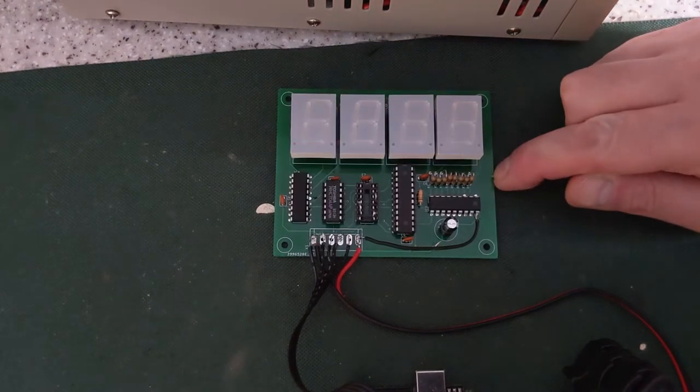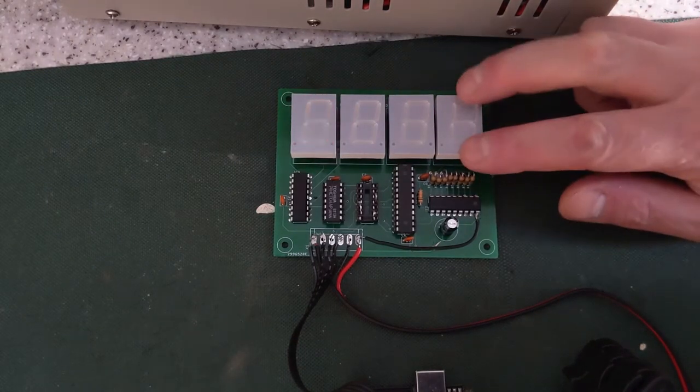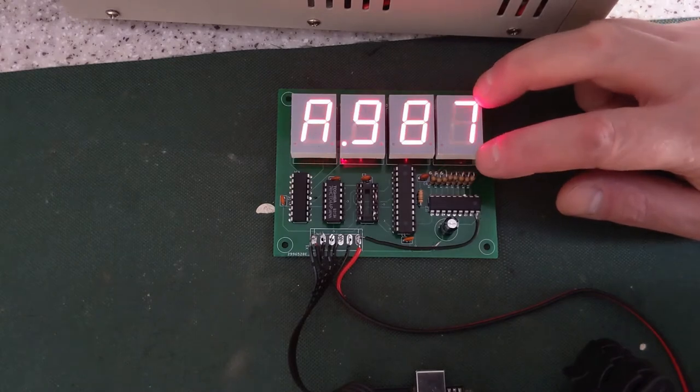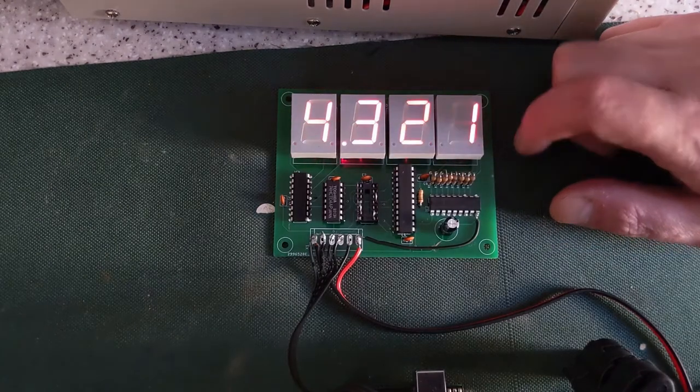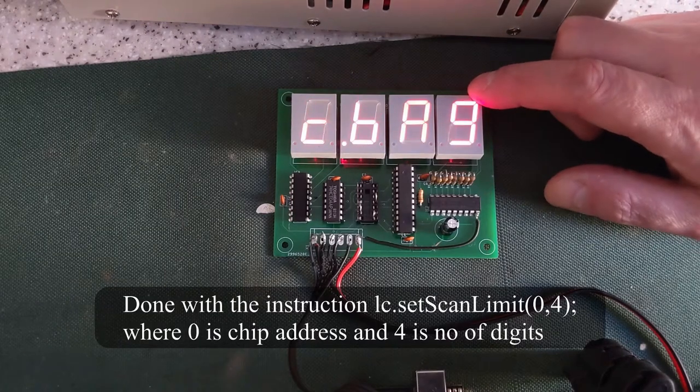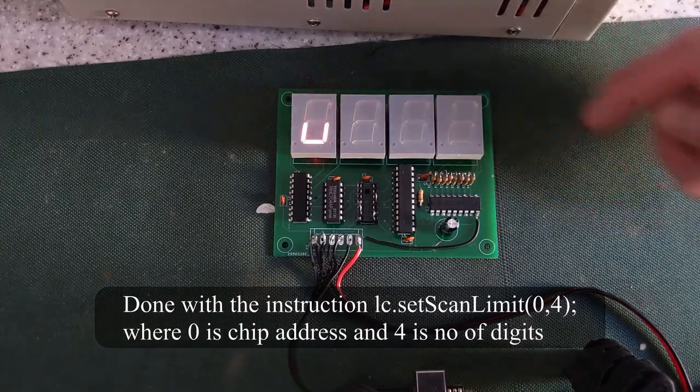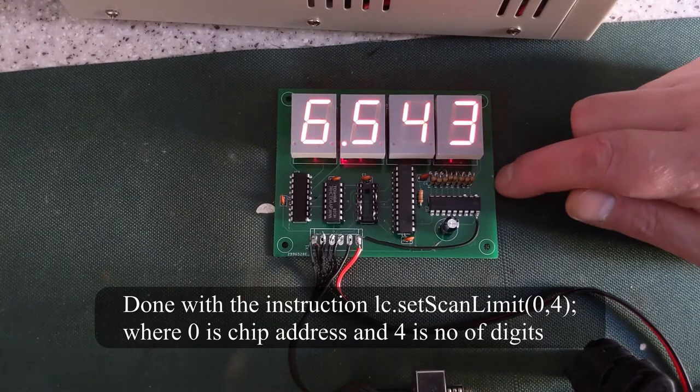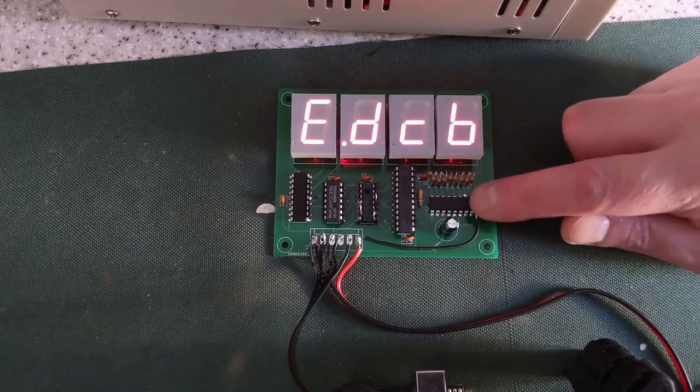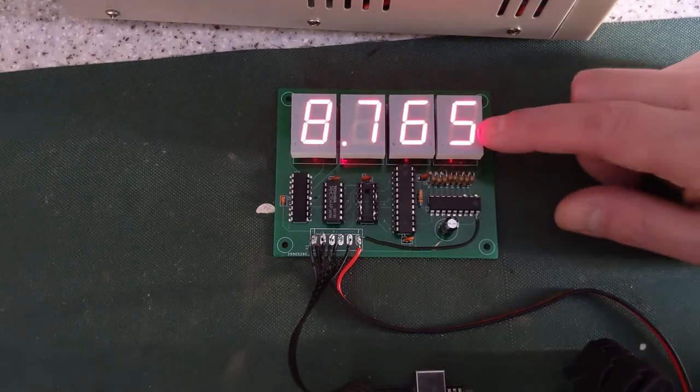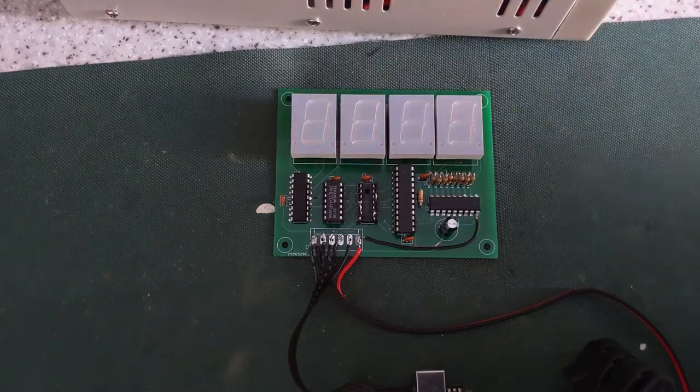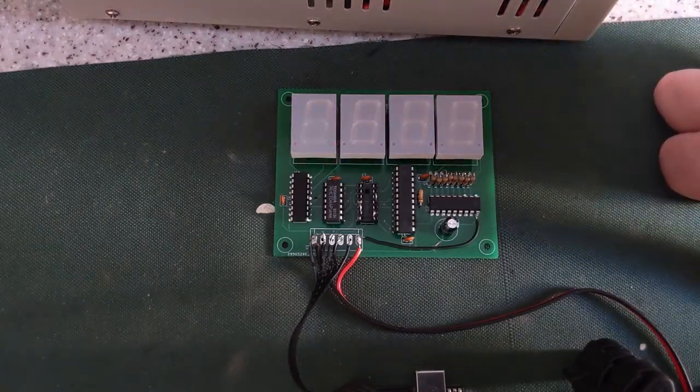This is giving 15 milliamps average current. The way that's worked out is because the scan limit is set to only four digits rather than eight. And there's approximately 60 milliamps being sourced from this chip peak current. So you divide that by four, that gives you 15 milliamps. And that is now bright enough.